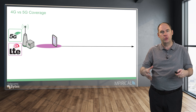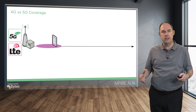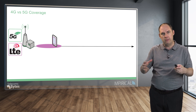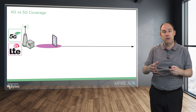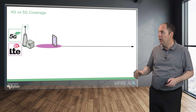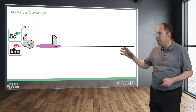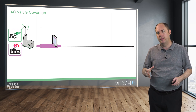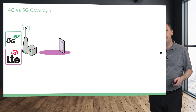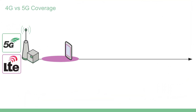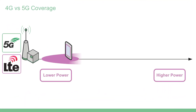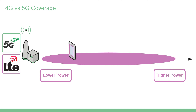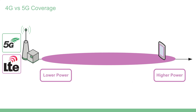Cells come in all shapes and sizes — big cells, macro cells, down to small cells, down to indoor small cells. Ultimately, when you say a small cell, what are we actually talking about? Well, we're talking about a cell which potentially has low power. And as you increase the power, you'll find that increases the size of the cell.